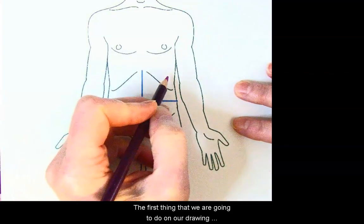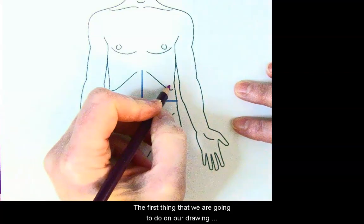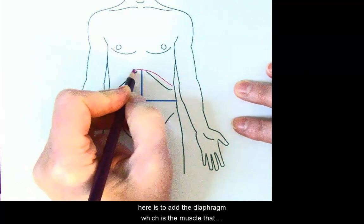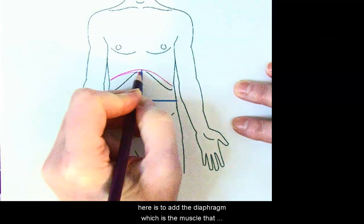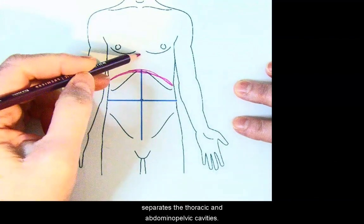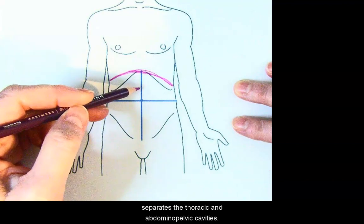The first thing that we are going to do on our drawing here is to add the diaphragm, which is the muscle that separates the thoracic and abdominal pelvic cavities.